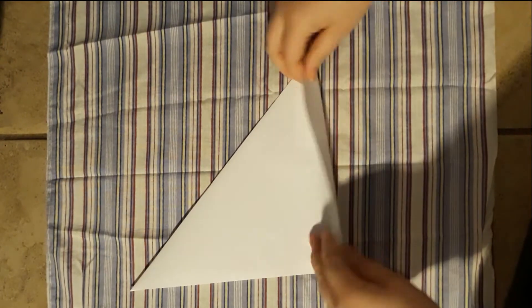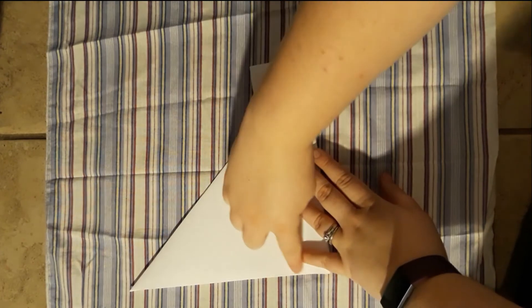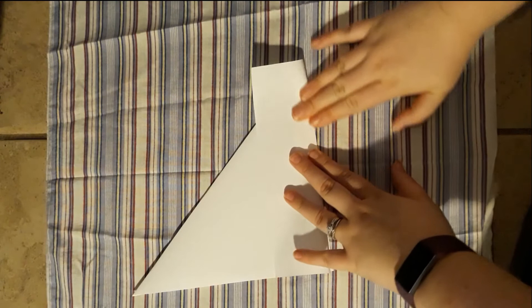Flip over your paper and fold over the side of the page like this. Again, making sure to line up your paper nicely. Press down to make a solid crease.